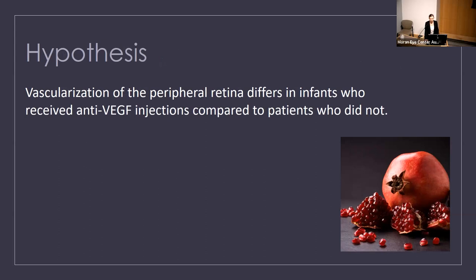My motivation: the incidence of ROP is increasing, it is poorly understood how anti-VEGF affects vascular growth in premature infants, and there's really not a lot of quantitative data available comparing vascularization differences between treated and observed patients. The goal of this study is to quantitatively investigate how retinal vascularization changes or progresses after a single injection of anti-VEGF compared to a group of patients that were observed and did not receive any treatment.